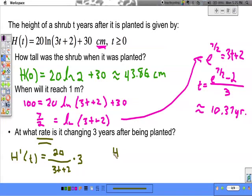And I want to know what is h prime of 3. So numerator, 60, over denominator, 3 times 3 plus 2 is 11. Approximately 5.5 centimeters per year.